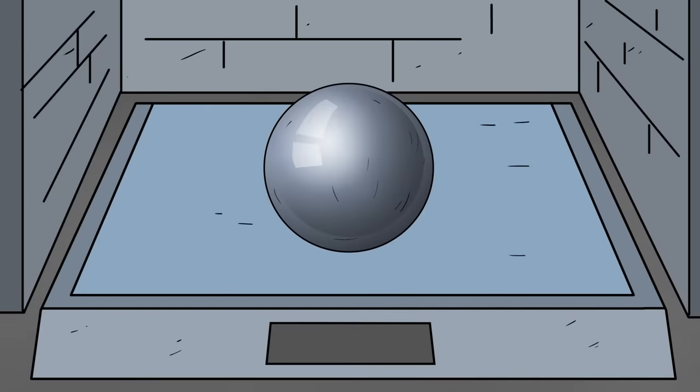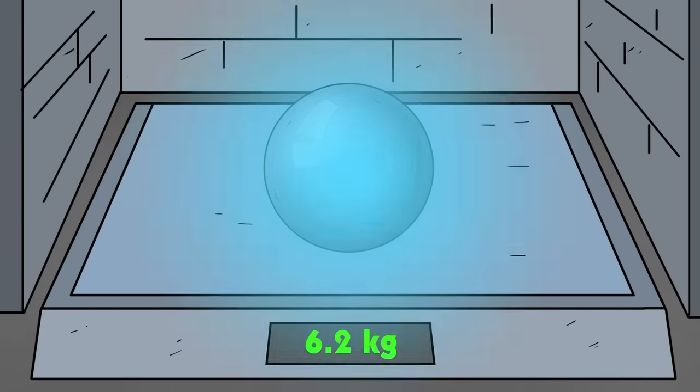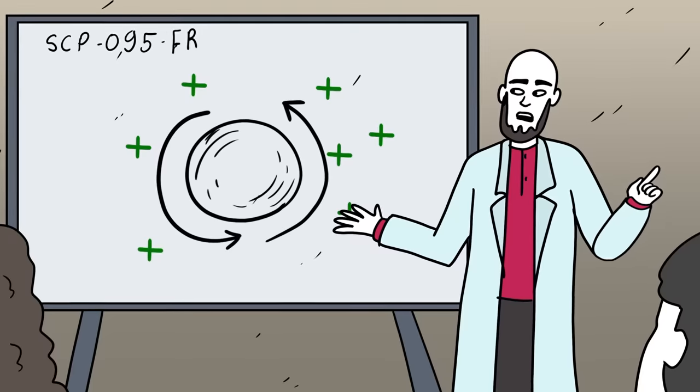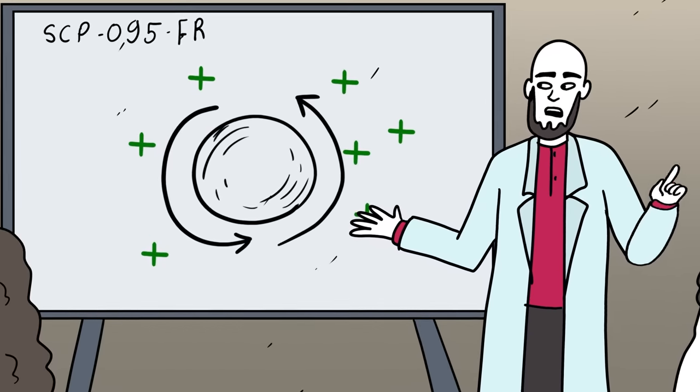The plutonium sphere is somehow able to maintain a consistent mass, despite its state, which should lead to a decrease in overall mass. It's theorized that it may be undergoing some sort of regenerative process, though it's been impossible to determine just how this might be occurring.